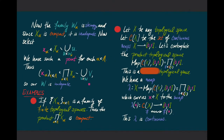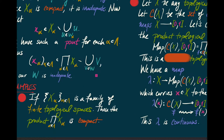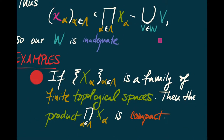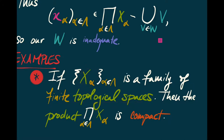So the Tychonoff theorem says that the product of any family of compact topological spaces is again compact. For example, if we have a family of any size — lambda could be as big as you like — but each X-alpha is a finite topological space, whether discrete, indiscrete, or quite complicated, it doesn't matter as long as they're all finite. This product will be compact.